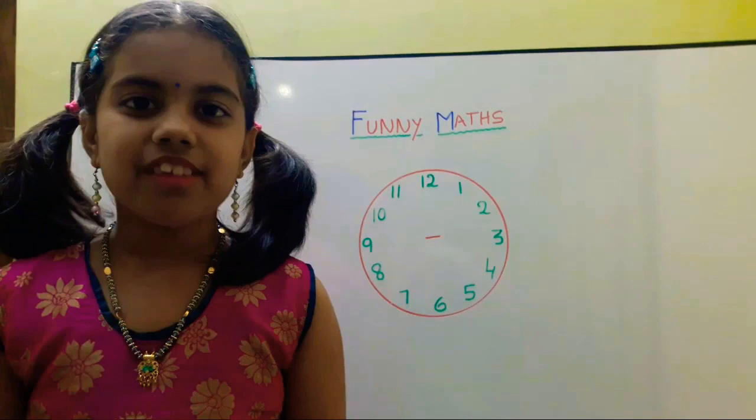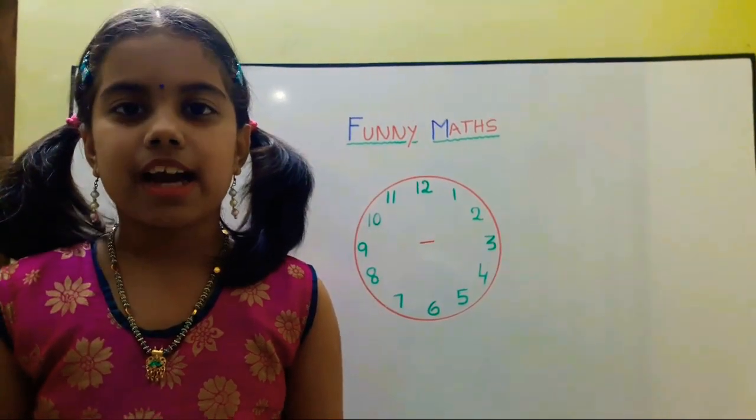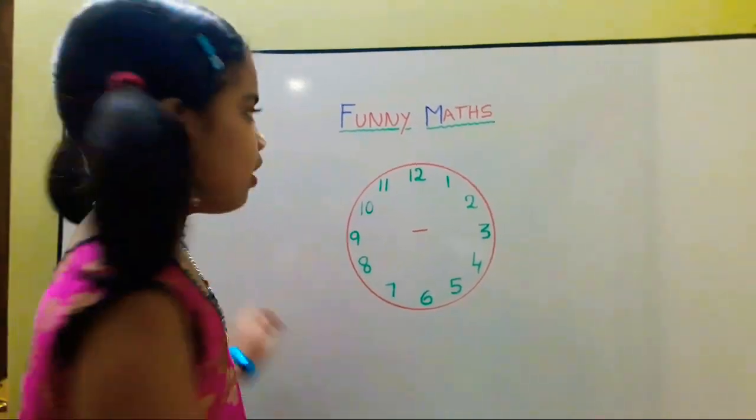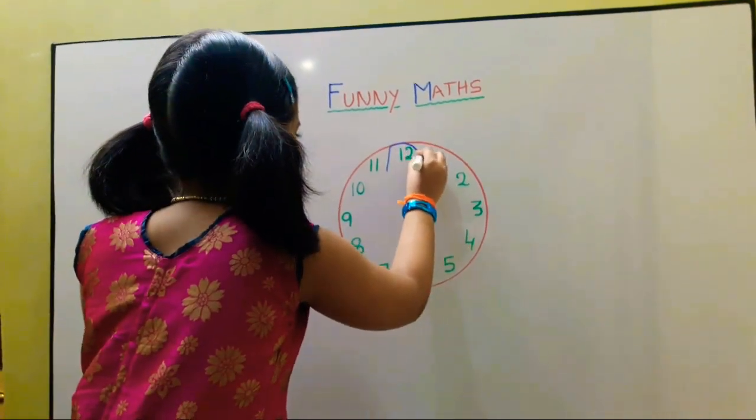In this circle we separate some numbers. It will come 6. 12 minus 6 is equal to 6.